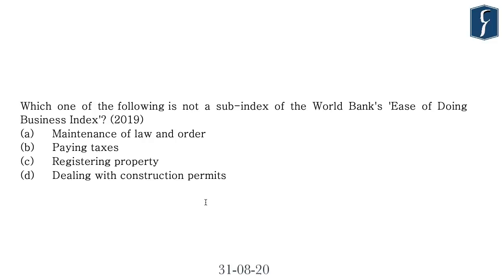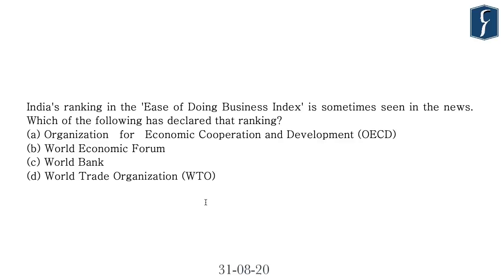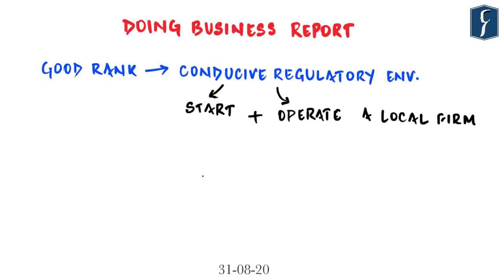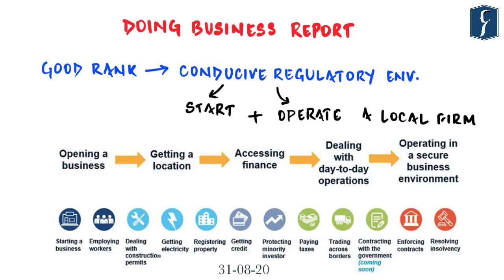From the perspective of the UPSC examination, we should understand the basics of the Doing Business Report. In 2019, UPSC asked which of the following is not a sub-index of the World Bank's ease of doing business index, and in 2016, UPSC asked about which organization declared India's ranking. The economies are ranked on ease of doing business, where a high ranking means a regulatory environment conducive to starting and operating a local firm. In totality, the Doing Business Index covers 12 areas of business regulation.